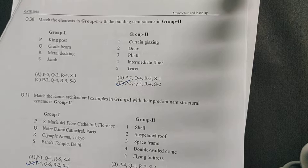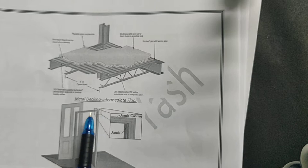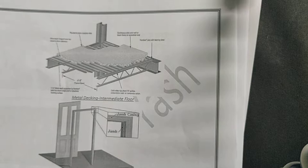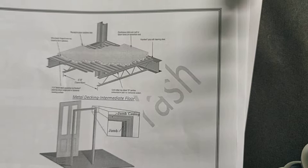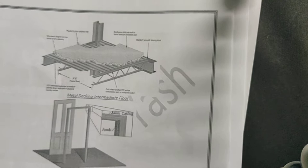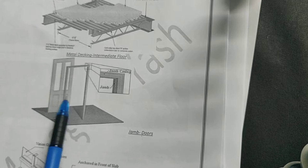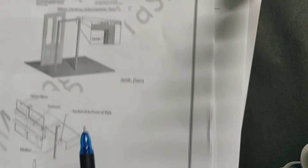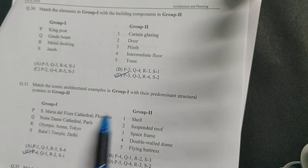Next is metal decking. Metal decking is used for creating your intermediate floors. You can see metal decking in the case of auditoriums. Above the stage area you have metal deck floors where catwalks are created. Next is jam. Jam is for doors. You can see you have a door frame, so this door frame is known as your jam.